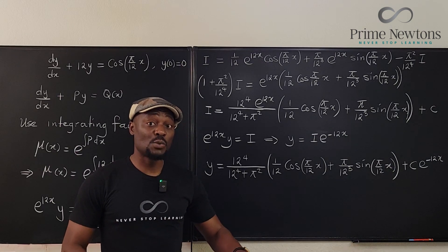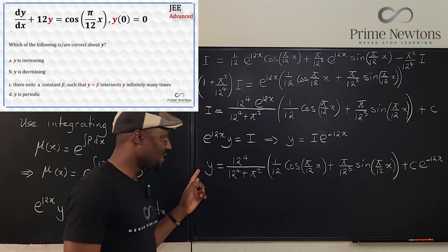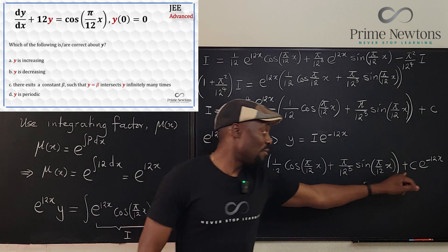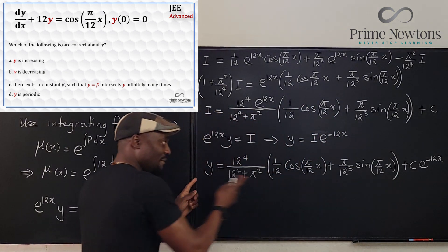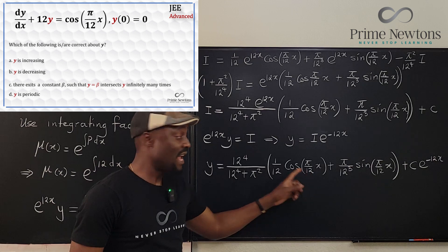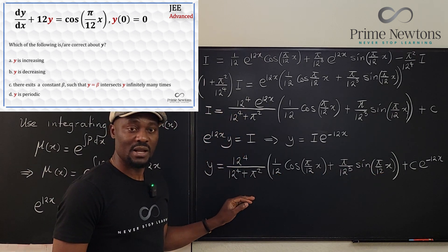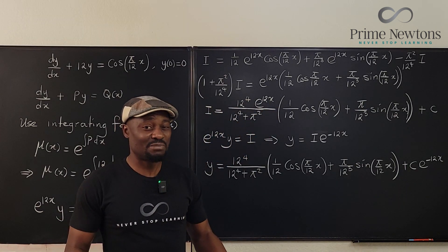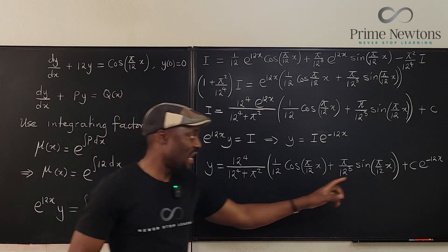Before going on, consider why the next step is necessary. Look at the solution and go back to the options: is this a periodic function? If C were 0, the solution would be purely sinusoidal — periodic. But we're adding C·e^(−12x), which is not periodic. When you add a non-periodic function to a periodic function, it's no longer periodic, unless C = 0.